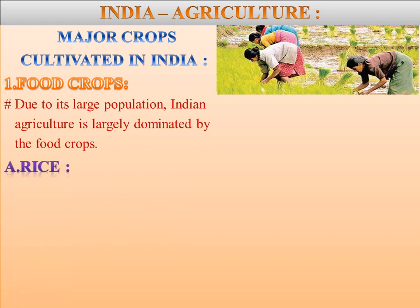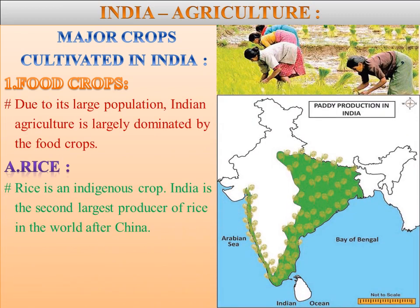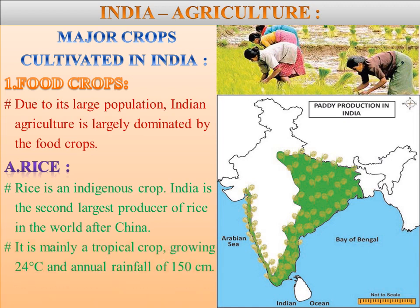Rice is an indigenous crop. India is the second largest producer of rice in the world after China. It is mainly a tropical crop, growing mainly with a mean temperature of 24 degrees centigrade and annual rainfall of 150 centimeters. Deep fertile clays or loamy soils are well suited for rice cultivation. It also needs an abundant supply of cheap labor.